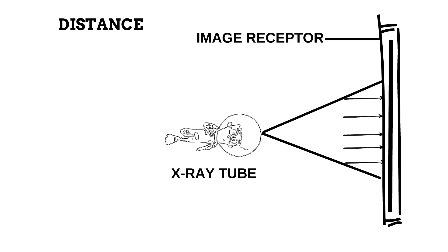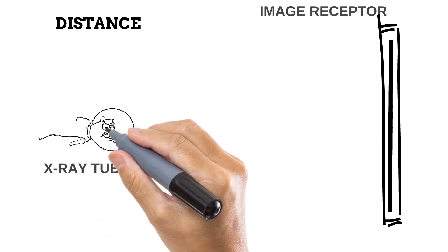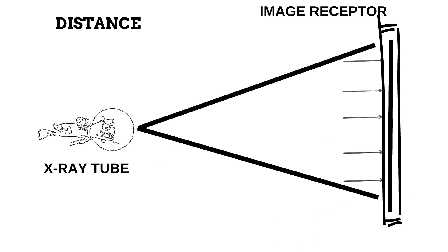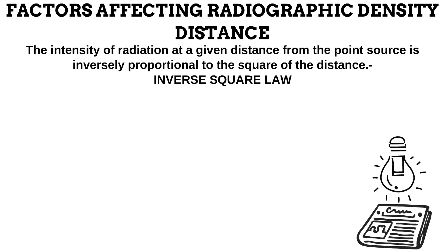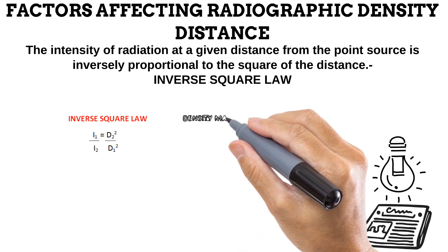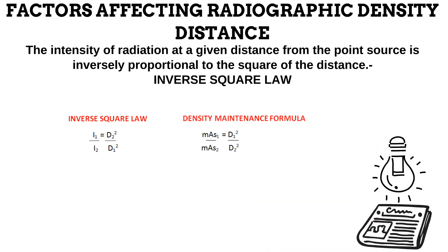When the tube is moved farther away from the image receptor, the divergent X-ray beam continues to spread out, covering a much wider area. If the MAS is kept the same and we still have our five hypothetical photons, the photons spread out to cover the wider beam area, and with fewer photons concentrated on a given area, a less dense image is produced. This explains how the inverse square law works. The inverse square law formula calculates the new intensity of X-ray photons at the image receptor when distance changes, while the density maintenance formula calculates the new MAS needed to compensate for a change in distance and produce the same radiographic density.